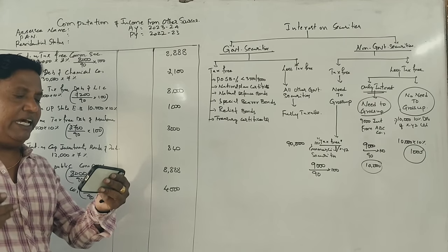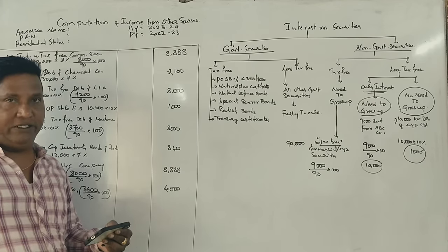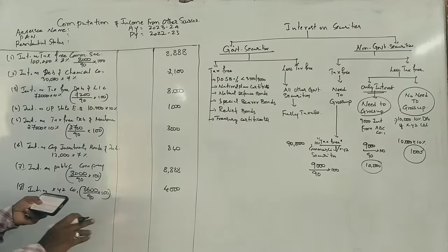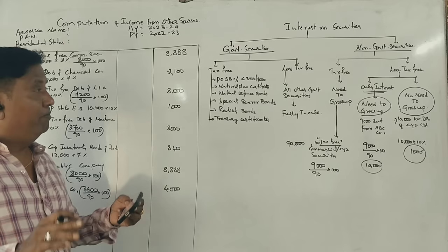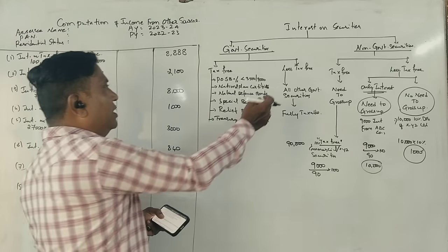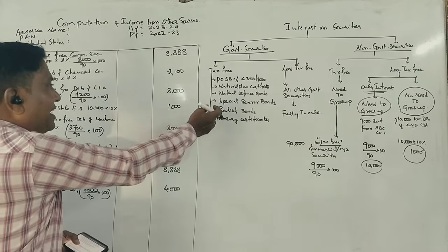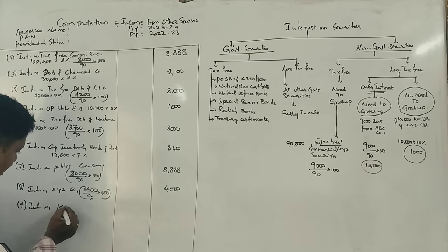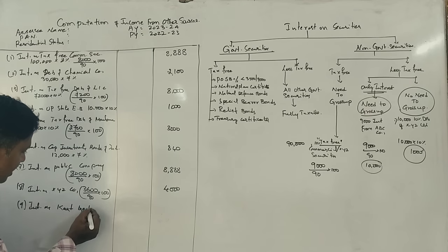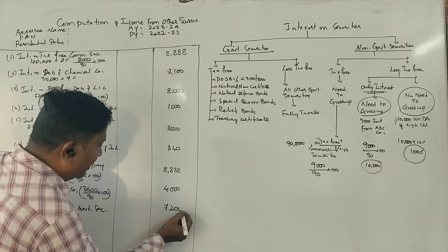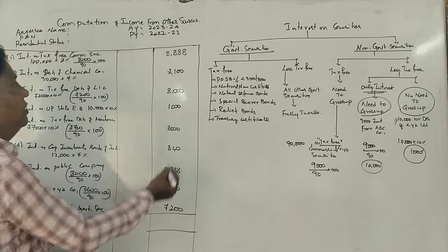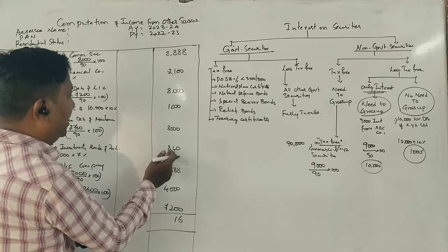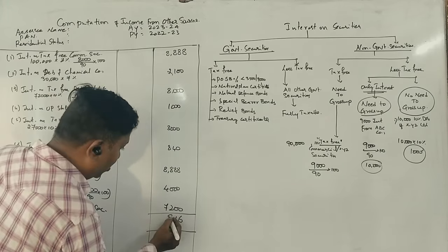Rs. 7,200 received as interest on Karnataka Government Securities. Karnataka Government Securities are less tax-free, so this is the actual amount. Interest on Karnataka Government Securities is Rs. 7,200.